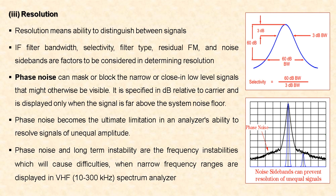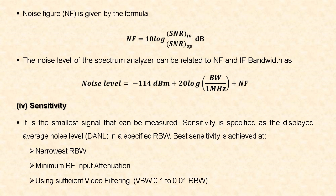Phase noise and long-term instability are frequency instabilities that cause difficulties when frequency ranges are narrowed in very high-frequency spectrum analyzers. Noise figure can be calculated by: NF = 10 log(SNR_input / SNR_output) in dB. The noise level of the spectrum analyzer can be related to noise figure and IF bandwidth as: Noise Level = −114 dBm + 20 log(bandwidth / 1 MHz) + Noise Figure.